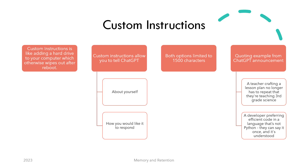The example they provide is that of a teacher who provides information about what level she teaches, so she doesn't have to repeat that the topics she queries are for developing lesson plans for a third grade science class. That way, when she queries anything like electrical circuits, ChatGPT would spare her the graduate-level complex intricacies of electricity and keep the response understandable to kids, without her explicitly requesting it each time.